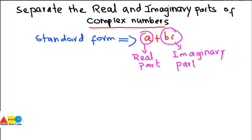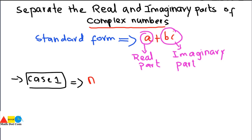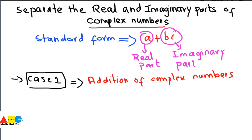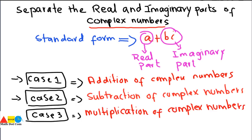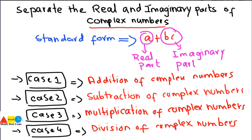We will discuss four types of cases. Case 1 is addition of two complex numbers, Case 2 is subtraction, Case 3 is multiplication, and Case 4 is division. When you encounter complex numbers under these operations, you have to convert them into standard form that clearly represents the real and imaginary parts separately.